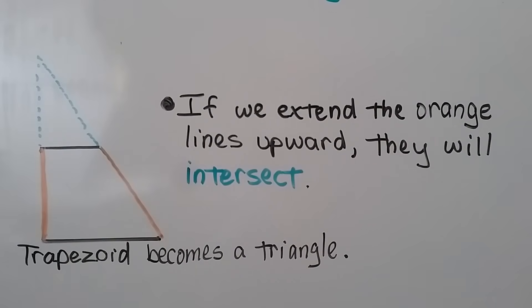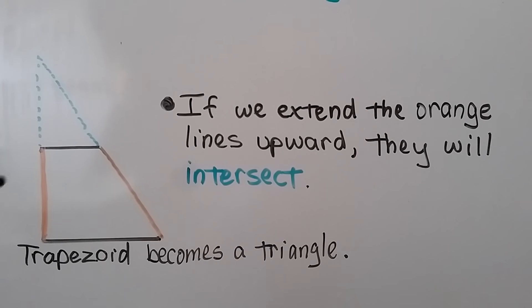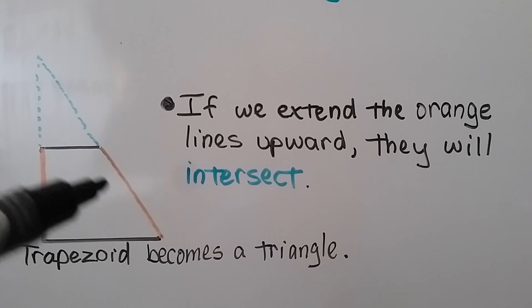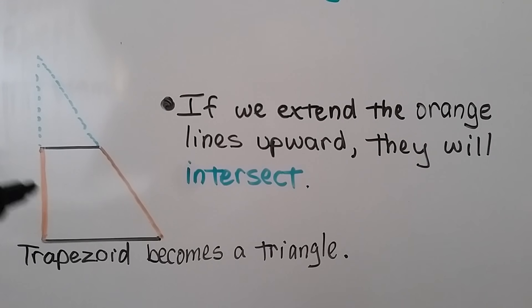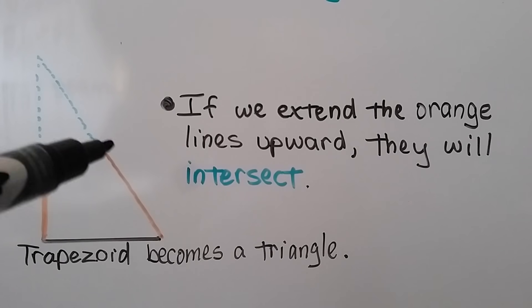If we extend the orange lines upward on this trapezoid, they will intersect up here and the trapezoid will become a triangle.